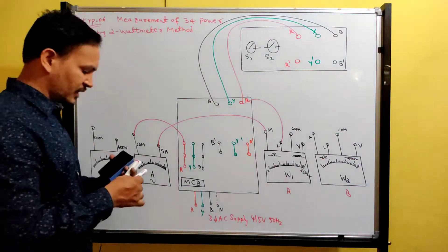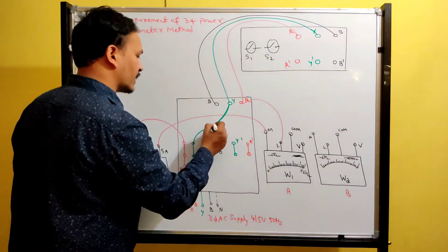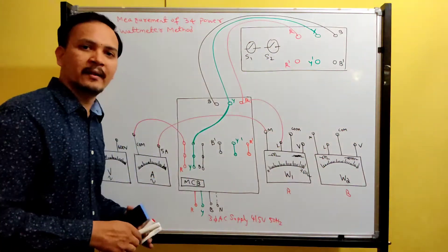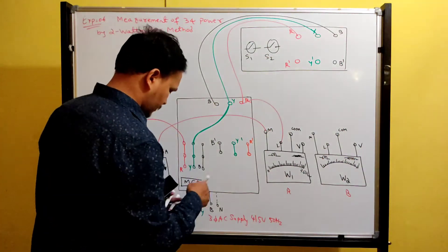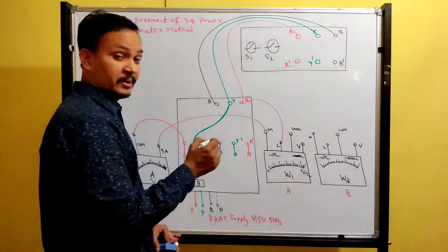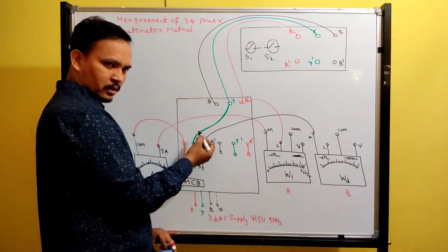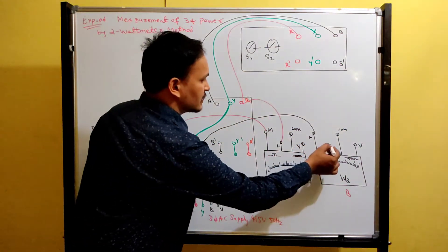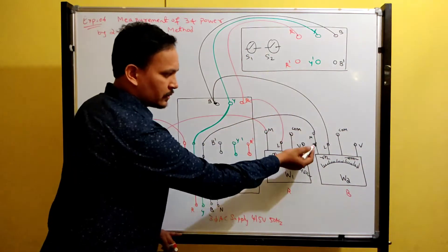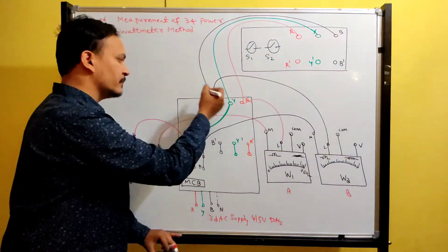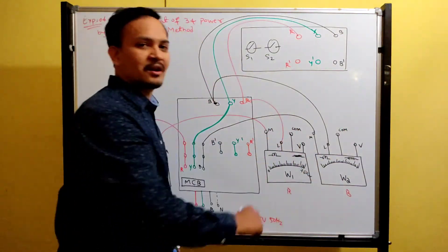For the current coils: in the Y line, no ammeter or wattmeter is connected — Y is directly connected to Y. In the B line, B is connected to M of wattmeter W2, and L is connected to B. This means B and B are joined through the current coil of W2.